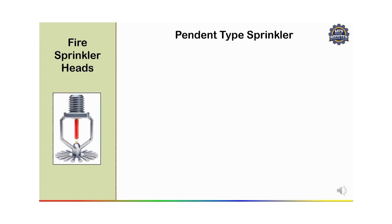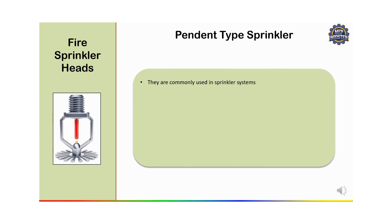The first one we discuss is the pendant type sprinkler. The most common type of sprinkler head, it hangs downward from the ceiling and distributes water in a pattern that covers the area below. As you can see in this figure, it sprays water downward in a circular pattern to maximize coverage. It is mounted on the ceiling with the deflector facing downward.